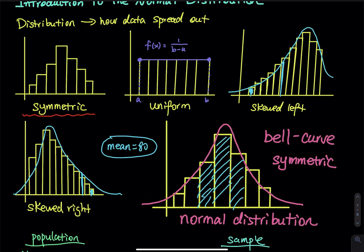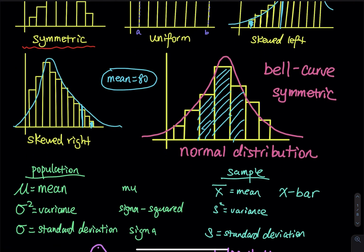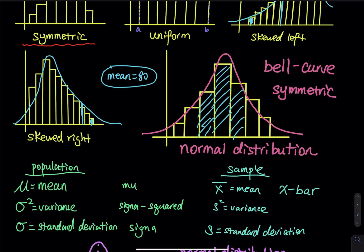Before we introduce the function of the bell curve, I need to reveal some symbols. For the population, we use mu for the mean — mu is a Greek letter that stands for the mean. The population variance uses sigma squared, also a Greek letter, and the standard deviation is sigma — the square root of variance. For the sample, the mean is x-bar (a bar on top of the variable stands for average). The sample variance is s squared and standard deviation is s.